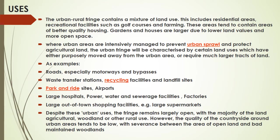The rural urban fringe consists of a mixture of land use. It includes residential areas and recreational facilities such as golf courses and farming. These areas tend to contain better quality housing; gardens and houses are large due to lower land values and more open space. Urban areas are extensively managed to prevent urban sprawl and protect agricultural land. The urban fringe is characterized by land uses that have either moved away from the urban area or require much larger tracts of land.